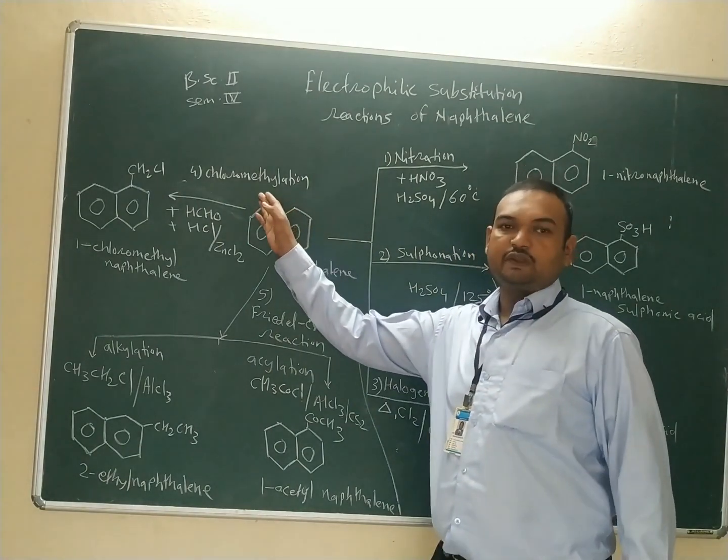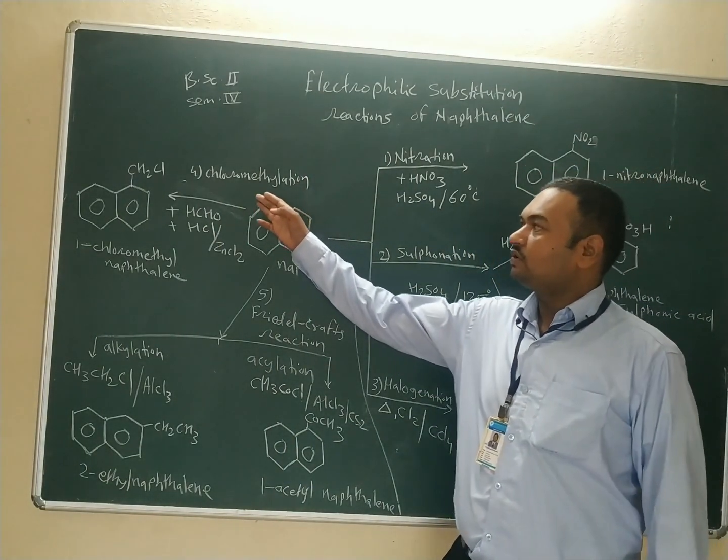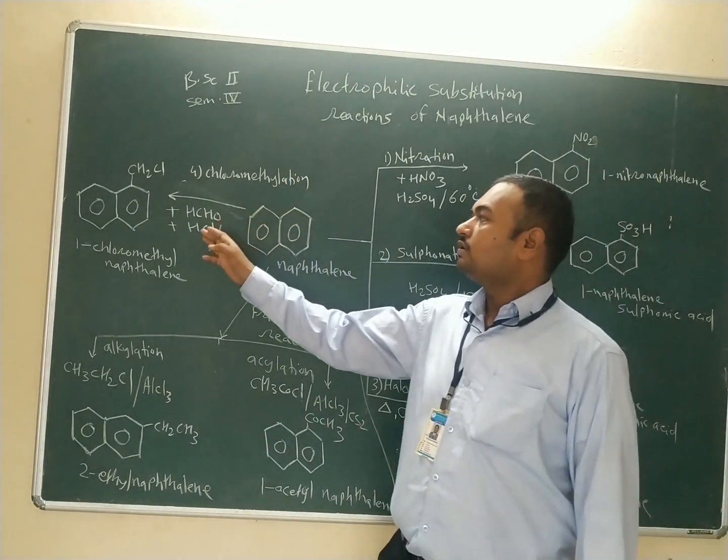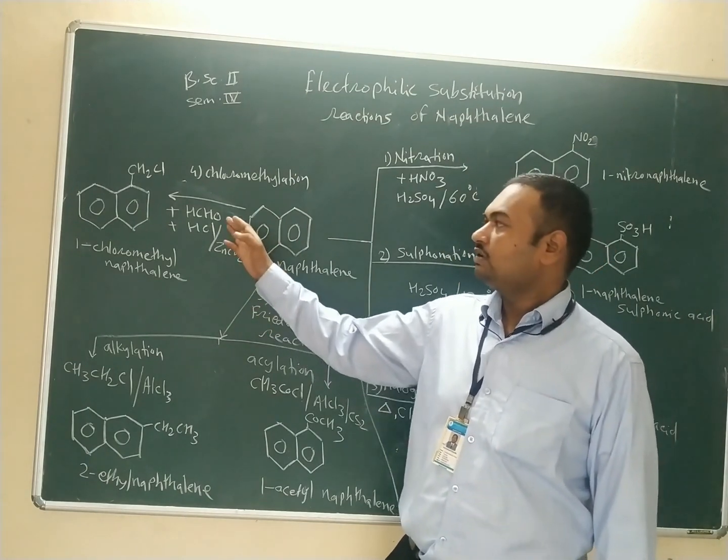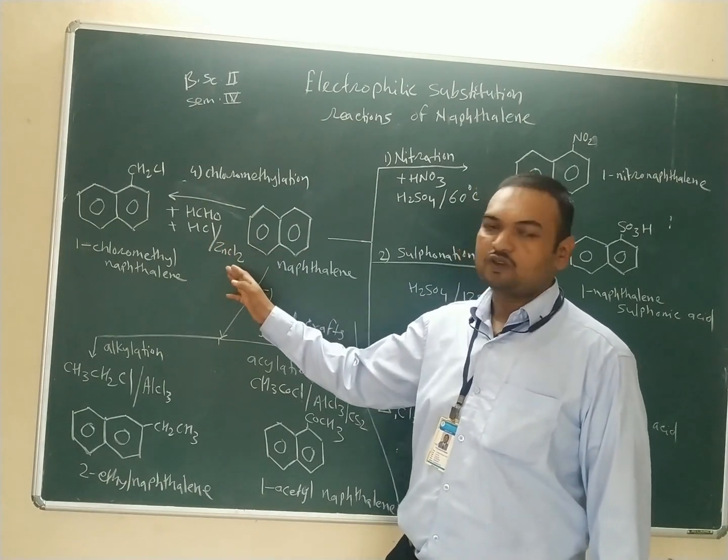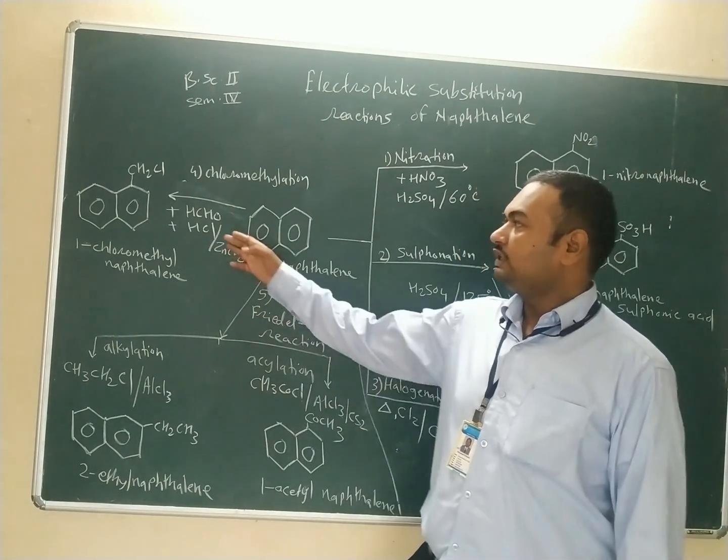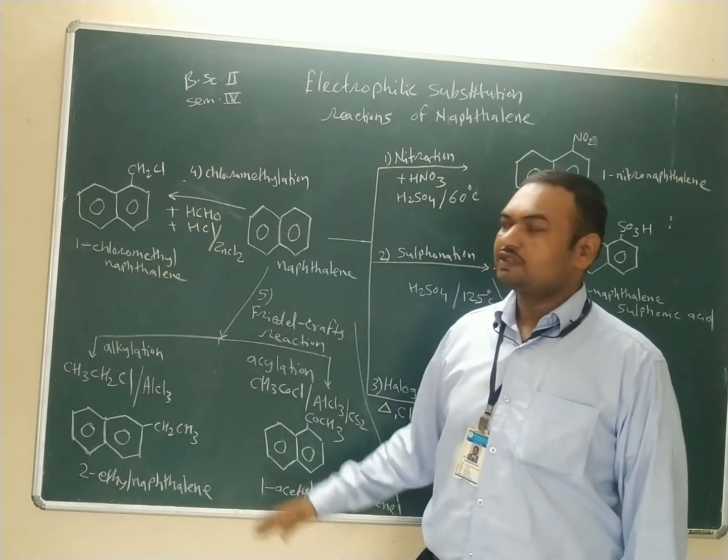Moving to our next reaction, we will see chloromethylation of naphthalene. Chloromethylation of naphthalene can be carried out by treatment of naphthalene with formaldehyde and hydrochloric acid in the presence of zinc chloride. From this reaction, 1-chloromethyl-naphthalene is obtained.